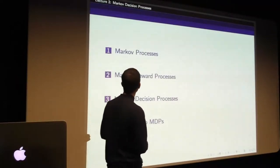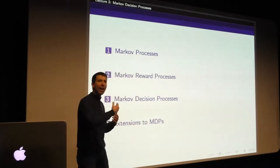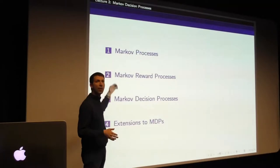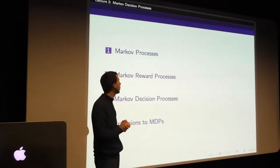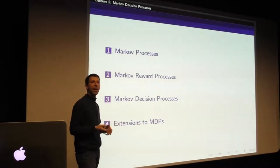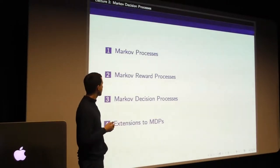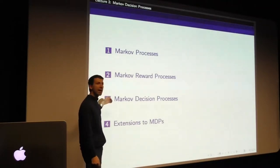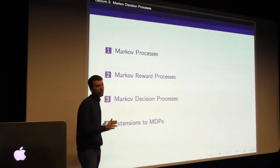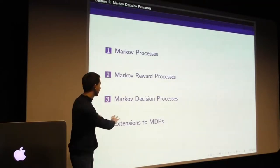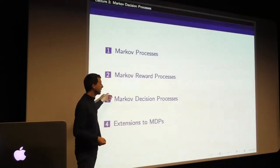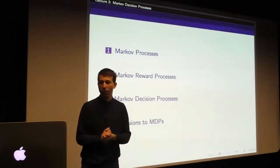A rough outline for today's class: we'll start by layering on more complexity, beginning with a basic idea - a Markov process or Markov chain. Then we'll introduce some perhaps less familiar ideas essential to reinforcement learning: first adding rewards to give a Markov reward process, then adding actions to give a Markov decision process. There are also extensions to MDPs, like partial observability, in the lecture notes.